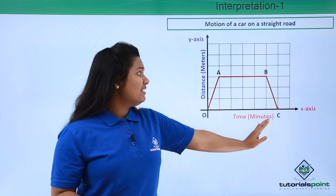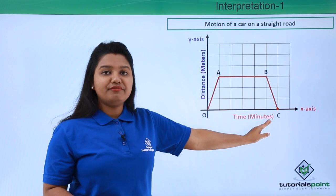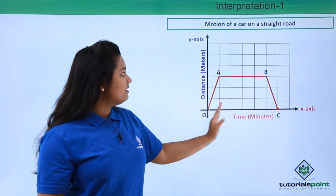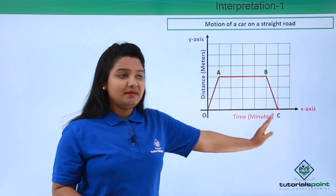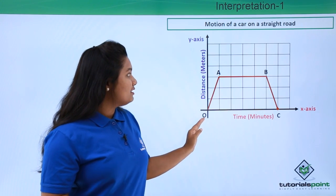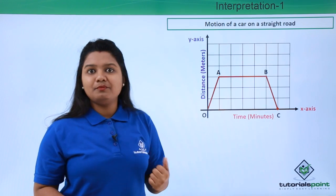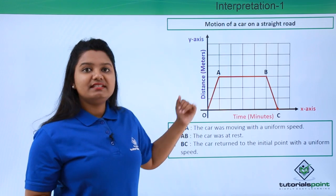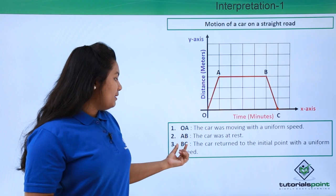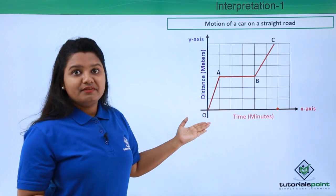Since the line AB is parallel to the x-axis, the car was at rest during that period. Then it started moving again. In the BC portion, the distance is decreasing with time and eventually comes to zero at point C. This means the car started from some point, reached a position, stopped for a while at A-B, and then returned to its initial position. So: OA — uniform speed; AB — at rest; BC — returned to initial point with uniform speed.